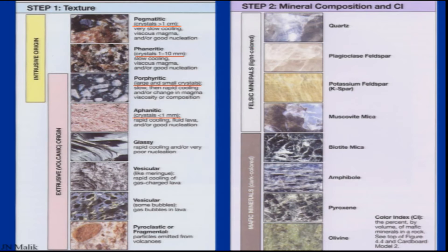Rocks with a composition of more mafic minerals will give darker colors, whereas rocks comprised of feldspar minerals will give lighter colors. By looking at the rocks directly, one can identify whether it is a feldspar-rich rock or a mafic-rich rock.